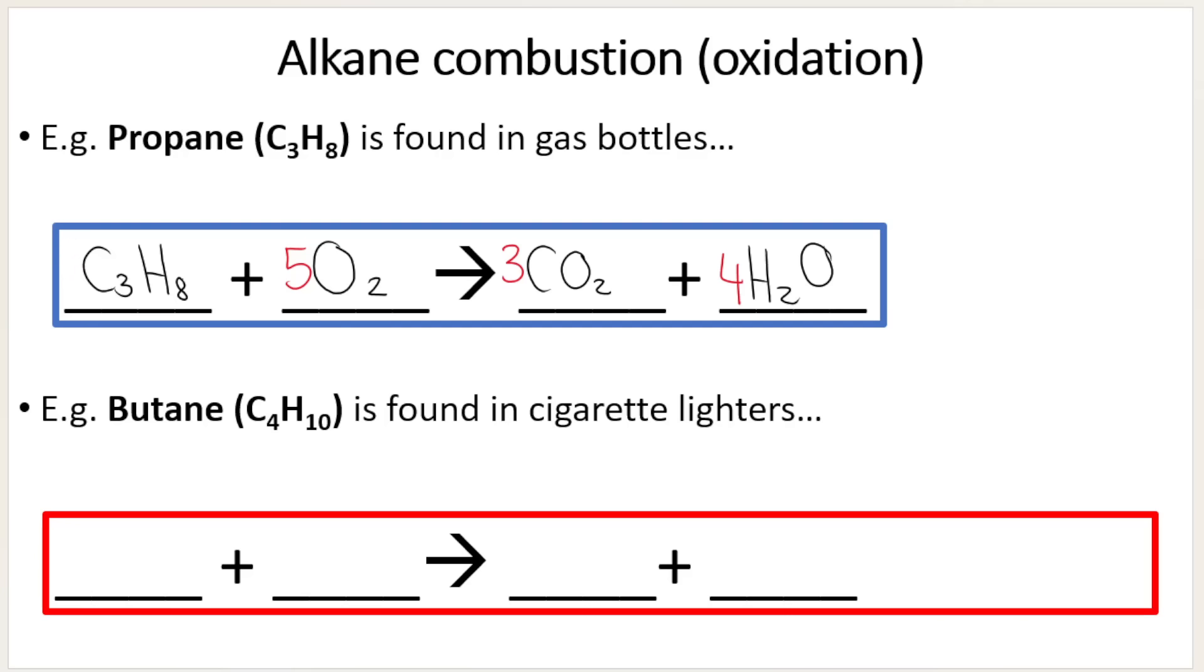What about butane? Okay, so butane is 4 carbons. So C4H10 reacts with oxygen, excess oxygen. That's the complete combustion of butane. It will form carbon dioxide and water. That's just the products for the combustion reaction. Now when we balance, we're going to balance the carbons first. So on the left-hand side, look at the left-hand side of the arrow. I've got 4 carbons over here, which means I need to put a 4 over there. So carbons, done.